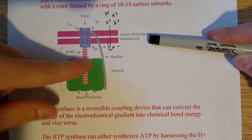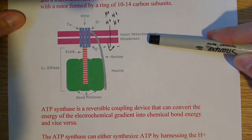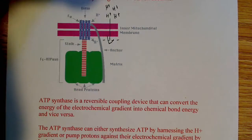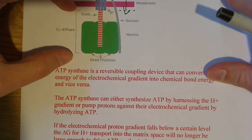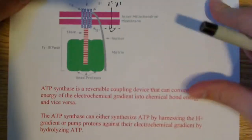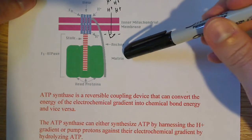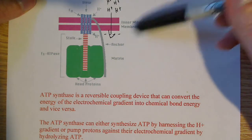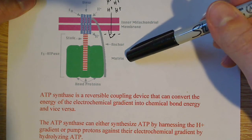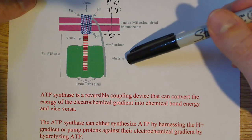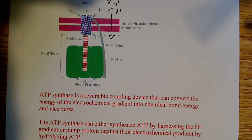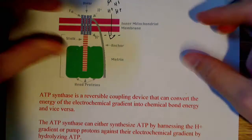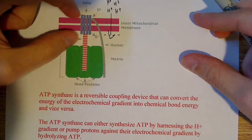The F0 carries protons which are transported into the matrix. Then we have the F1 ATPase — that's this whole section here, the head proteins. If this is the inner mitochondrial membrane, this is the mitochondrial matrix, so this is actually inside the mitochondria. It's not fully embedded in the membrane — only the F0 portion is embedded in the membrane.